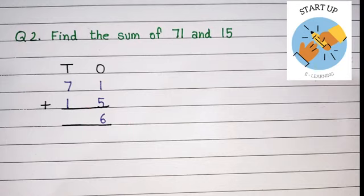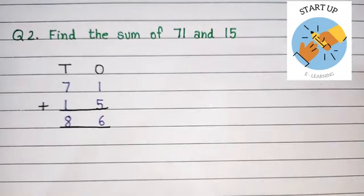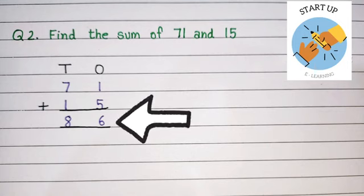Let's add the digit in the tens column. 7 in your mind and open 1 finger. By counting forward, we will close that finger: 7 after 8. So the answer of 7 plus 1 is equal to 8. The sum of 71 and 15 is 86.